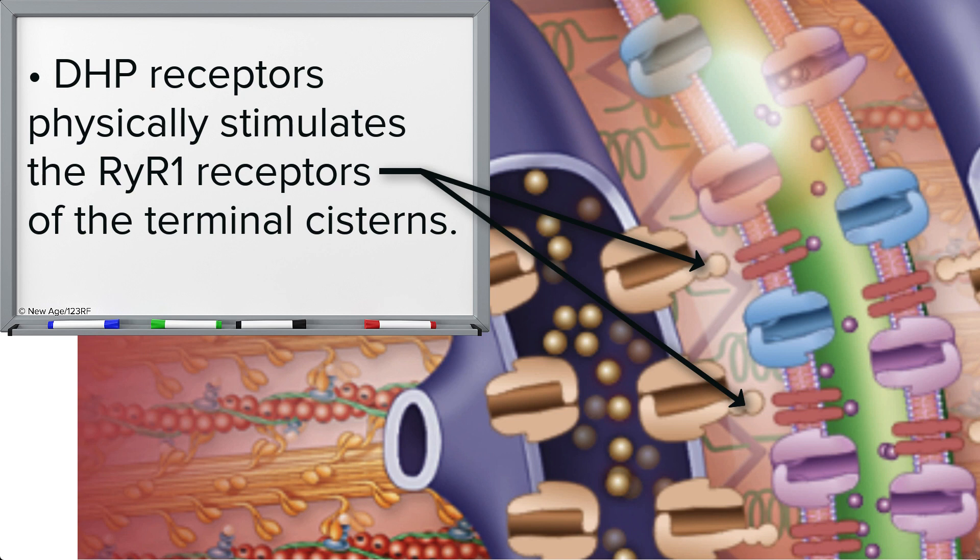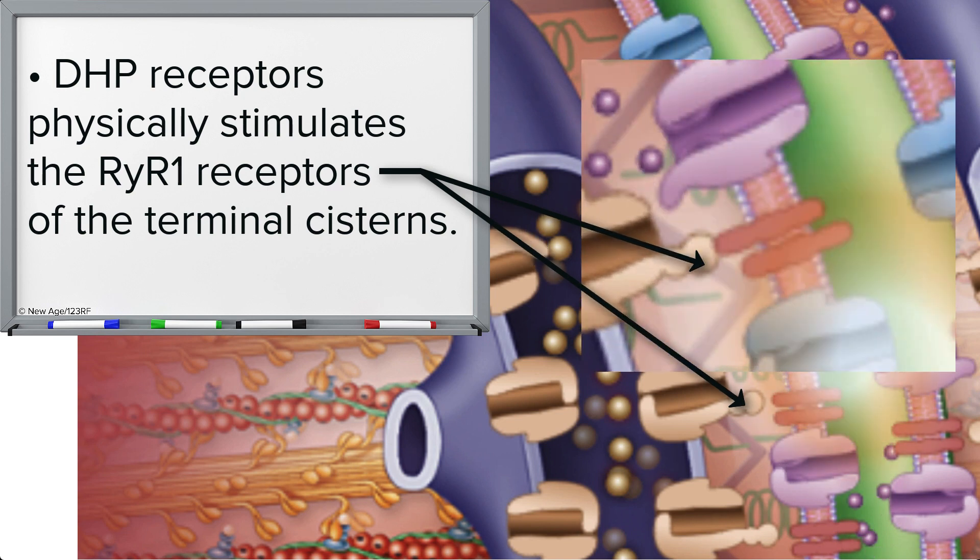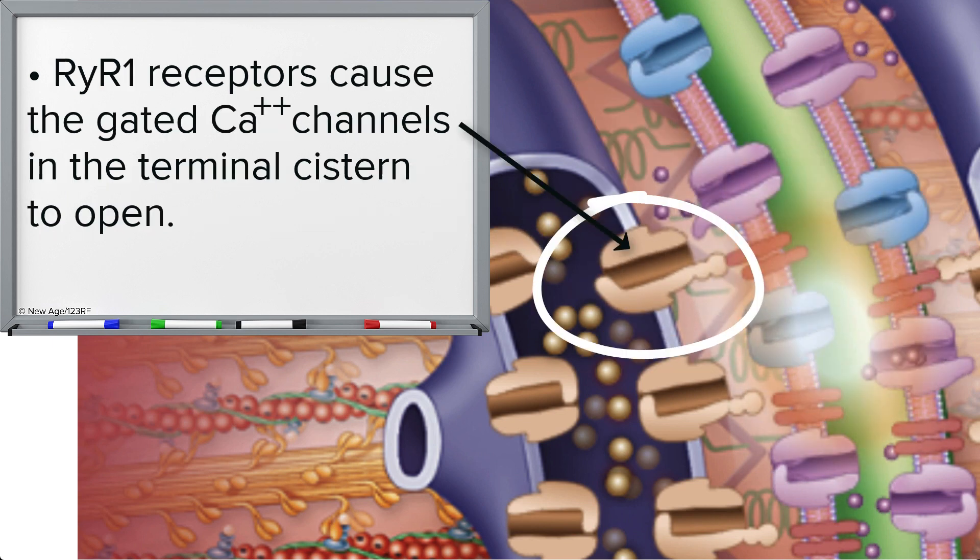When the DHP receptors are stimulated, they undergo a conformational change, which means they change shape. That change triggers the RYR1 receptors and causes the opening of the calcium ion channels in the terminal cistern of the sarcoplasmic reticulum.